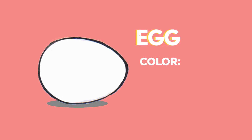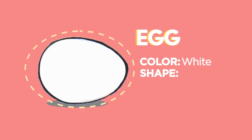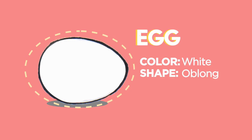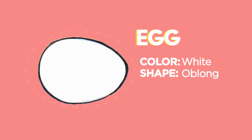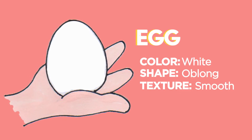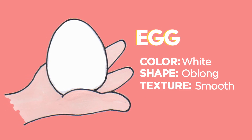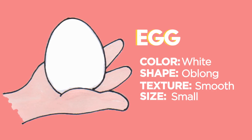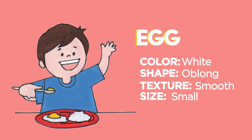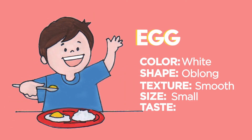Let's identify the different characteristics for these objects. This is an egg. What is its color? It's white. How about its shape? It looks like a circle, but it's elongated — that's called an oblong. If we touch it, how does it feel? It feels smooth. Be careful! Eggs should be handled carefully. What is its size? It's small — it can even fit the palm of your hand. When we cook it, what does it taste like? If you put salt for seasoning, it will taste salty.